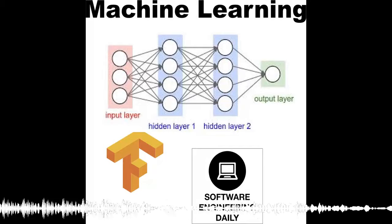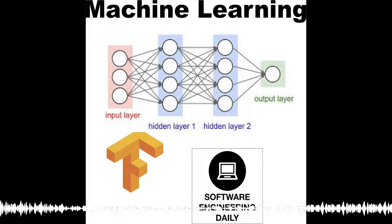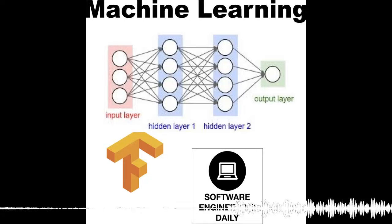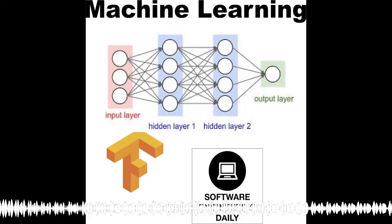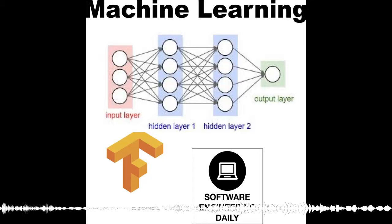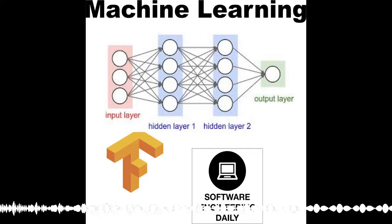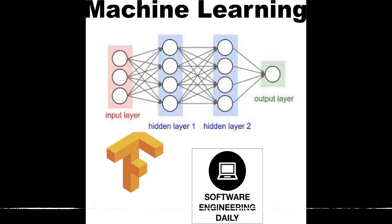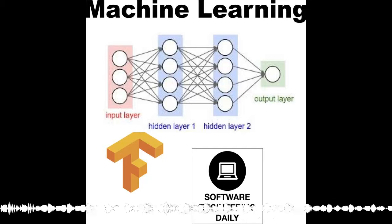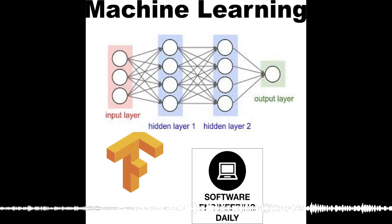Magenta is a project out of Google Brain to design algorithms that learn how to generate art and music. One goal of Magenta is to advance the state of the art in machine intelligence for music and art generation. Another goal is to build a community of artists, coders, and machine learning researchers who can collaborate with each other.